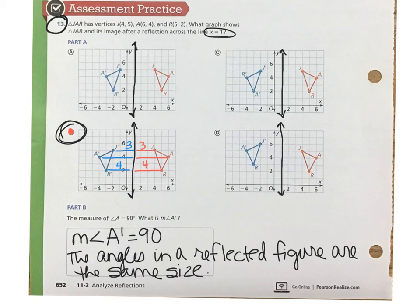For part B, the measure of angle A is 90 degrees, so the measure of angle A prime is also 90 degrees. Remember, the angles in a reflected figure are the same size. So we have the exact same size and the exact same shape, they're just oriented differently.